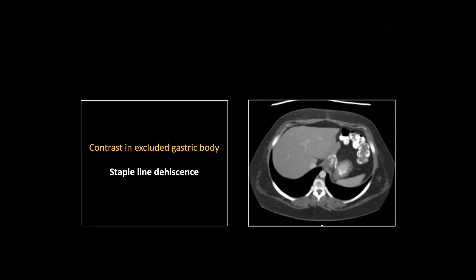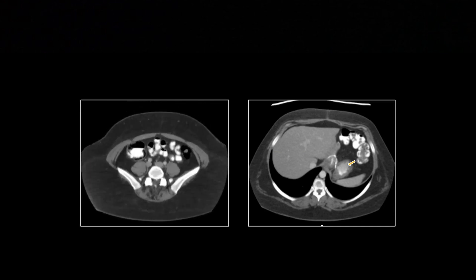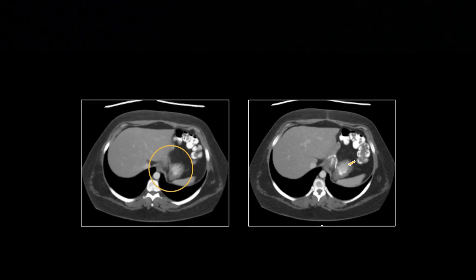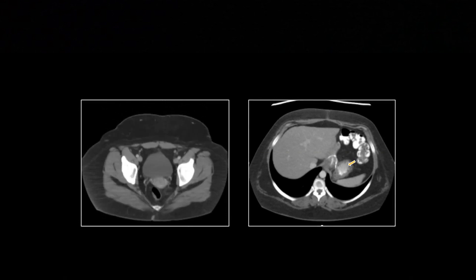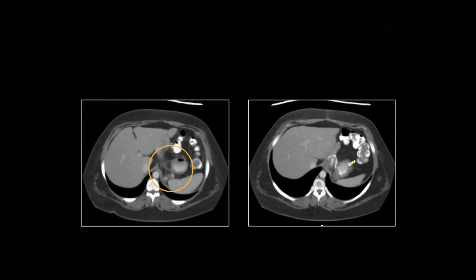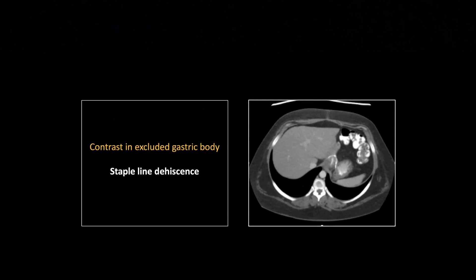This is a straightforward staple line dehiscence — a little more subtle because there's less contrast flowing into the native gut lumen. You can see the staple line and then contrast within the native gastric fundus where it should not be; it should go through the sequestered portion and flow straight into the efferent loop. Just a little contrast in that native stomach is sufficient to diagnose staple line dehiscence. It may not cause terrible problems immediately, but it suggests weakening of the staple line that may require revision.